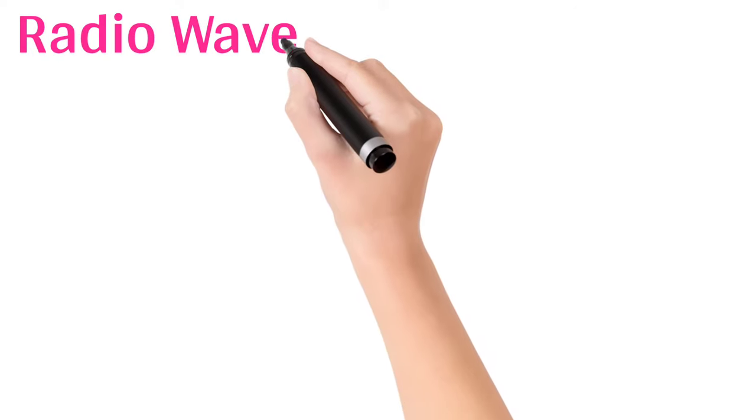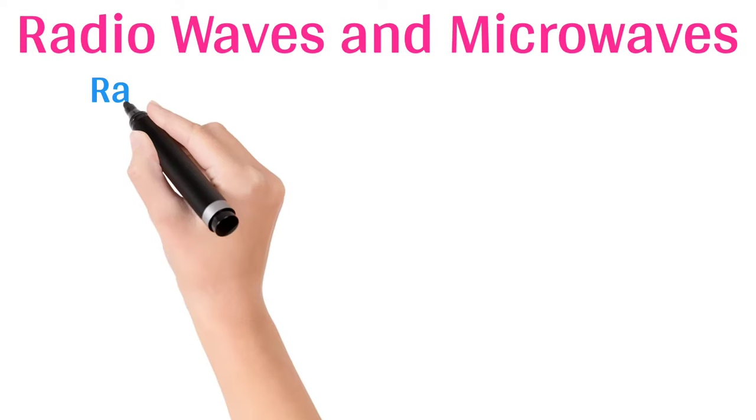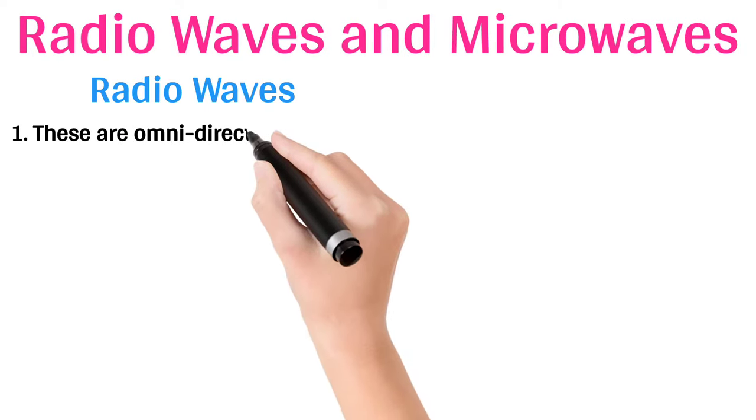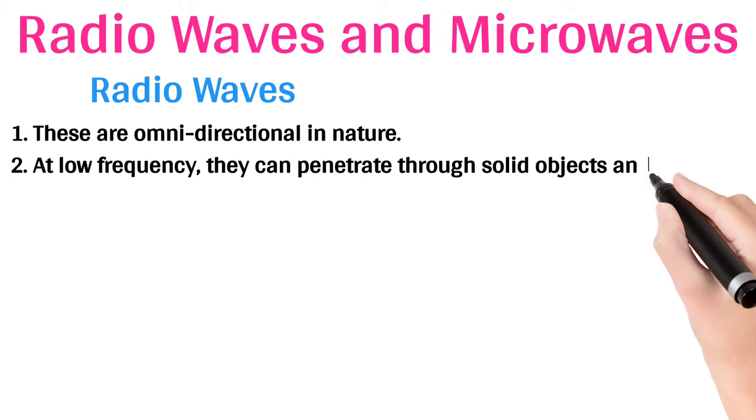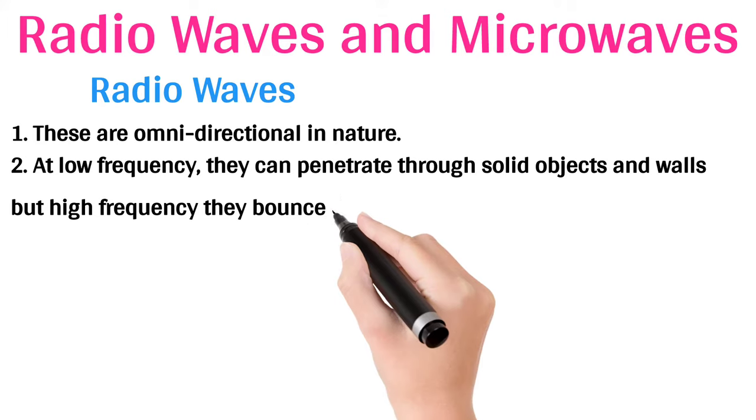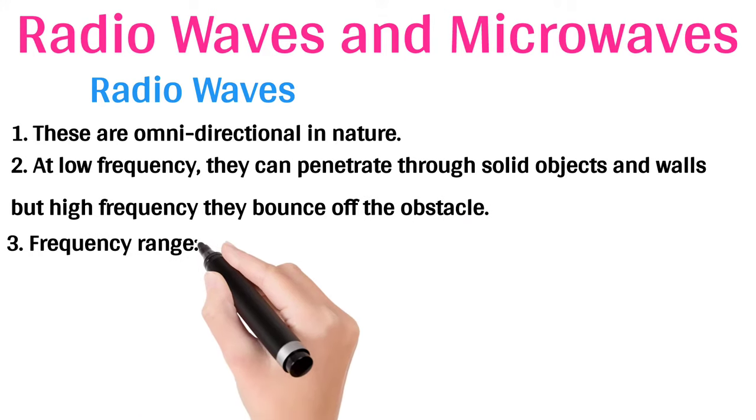Radio waves and microwaves. Radio waves. These are omnidirectional in nature. At low frequency, they can penetrate through solid objects and walls but at high frequency they bounce off the obstacle.